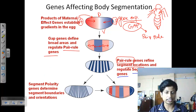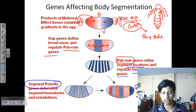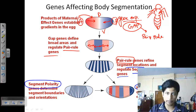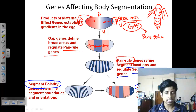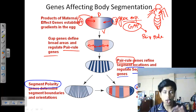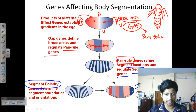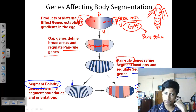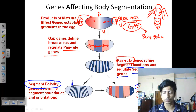Segment polarity genes and homeotic genes work at the downstream level. Segment polarity genes determine the boundaries of each segment, while homeotic genes define the role of each segment. So once the segment polarity gene determines the boundary, the homeotic genes determine that a particular section will be part of the thorax — for example, the portion where the wings will be attached.